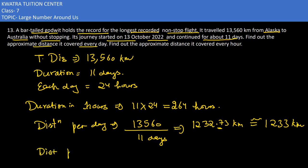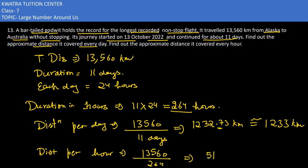Now we calculate the distance per hour. We take the total distance and divide by total hours: 13,560 divided by 264. That results in 51.36 km. So the approximate distance covered per hour is 51 km.